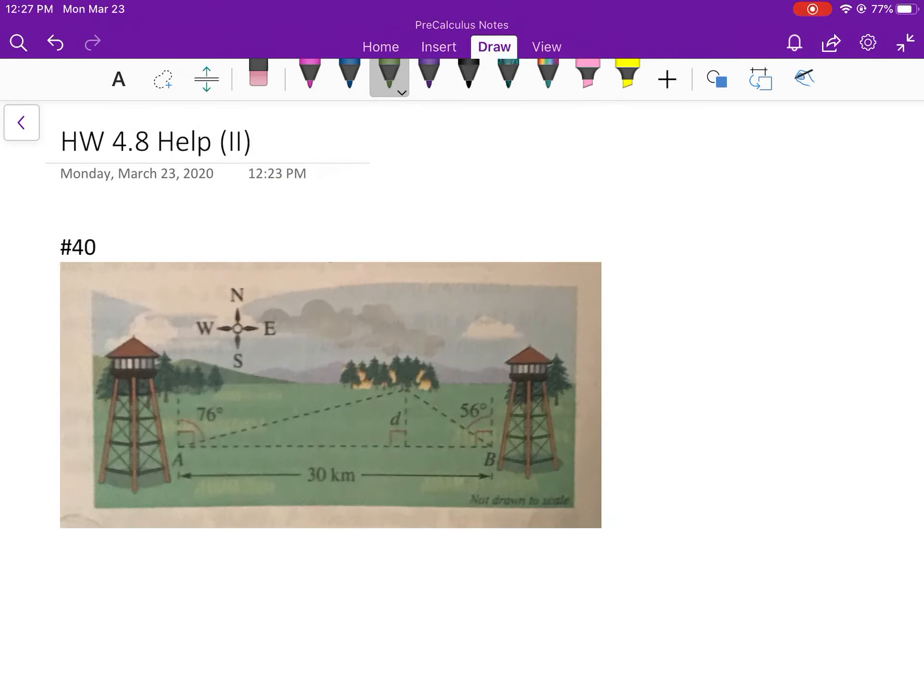Okay, first of all, this is a right angle so we know this is going to be 14, just different color here, 14 degrees and this one's going to be 90 minus 56 which is 34 degrees.